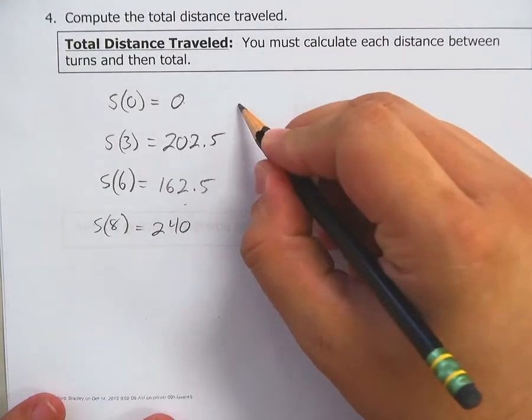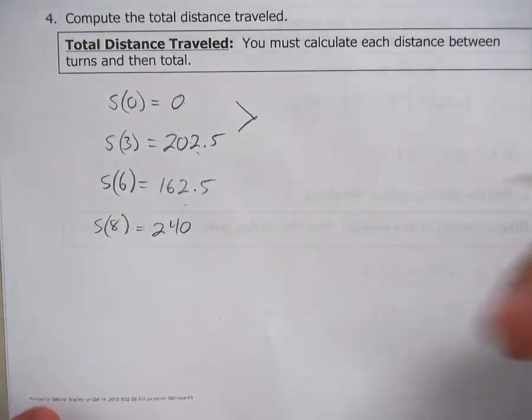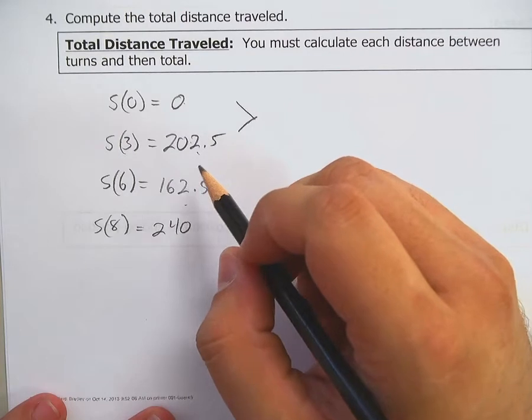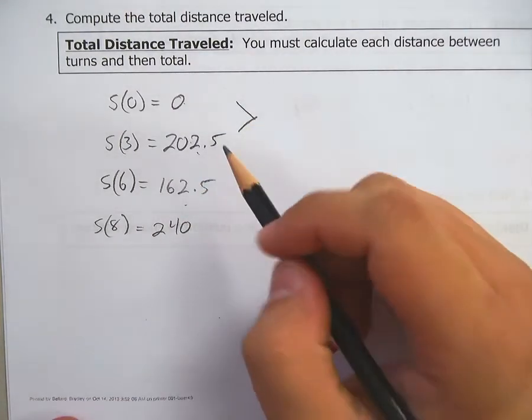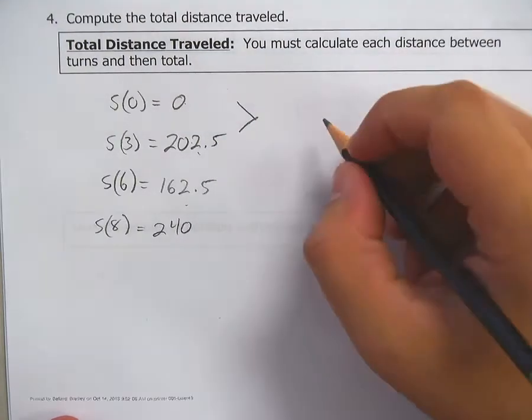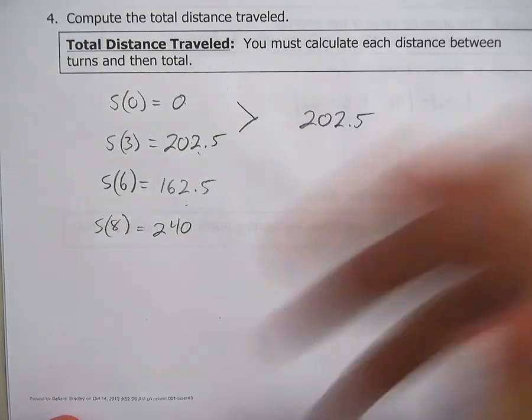So we're going to look at total distances. To go from 0 miles to 202.5, let's say it's in miles, just because that makes it easier. To 202.5 miles, meters, inches, whatever you want to measure in. To go from 0 to 202.5, you actually traveled 202.5, whatever units it's in.